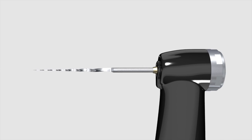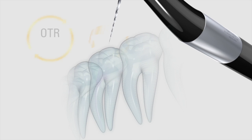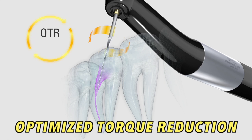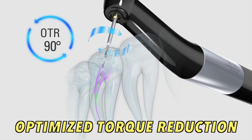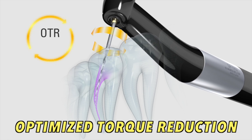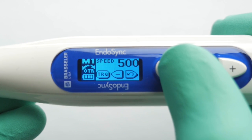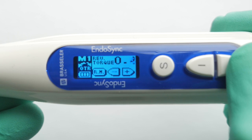Now let's talk about the Endosync. This is a new addition to the Endosequence and ESX line — a cordless rotary handpiece that works great with a special rotary motion I call safe rotation, known as OTR or Optimized Torque Reduction by the manufacturer. It's basically a 360-degree clockwise rotation with a sudden 90-degree counterclockwise motion when you exceed the programmed torque value. Torque values can be set to 0.2, 0.4, 0.6, 0.8, or 1.0 Newton centimeter.